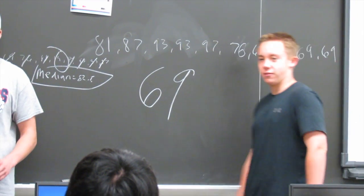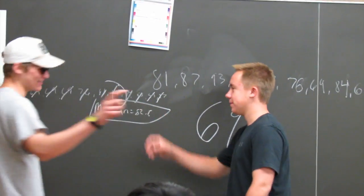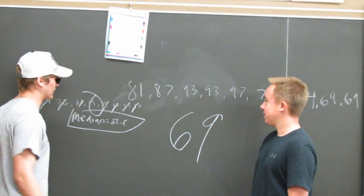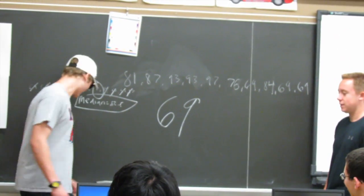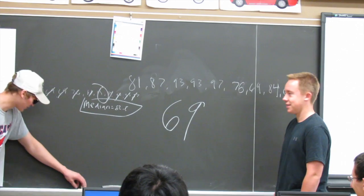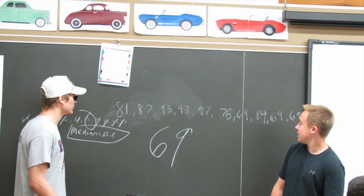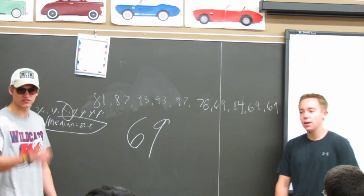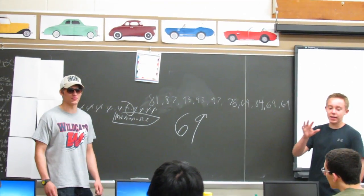One measure to go. How do you find the mean? You add up all the numbers. 81 plus 87 plus 93 plus 93 plus 97 plus 76 plus 69 plus 84 plus 69 plus 69. Add those up and divide by the number of numbers.